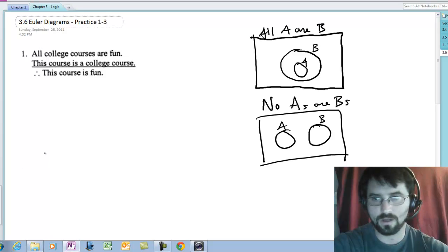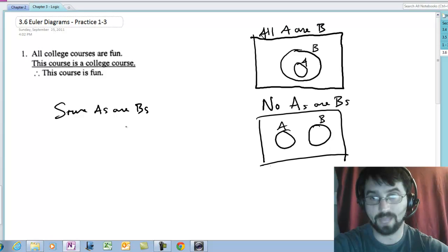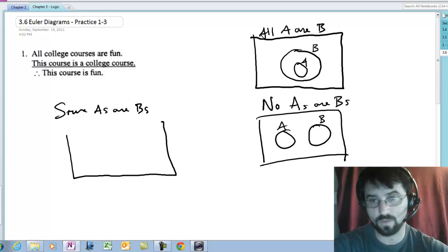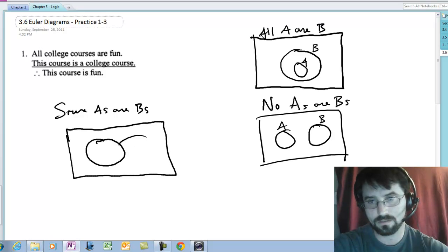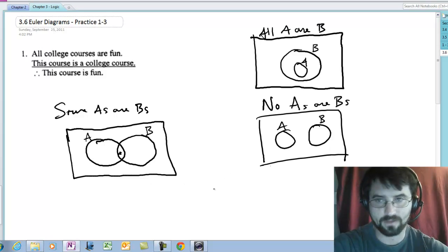If I wanted to draw some A's are B's, or some A is a B, I would have to show that at least one A is a B. I would say there's at least one element inside the intersection.